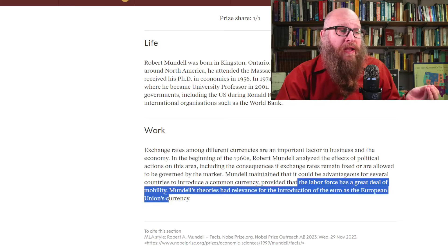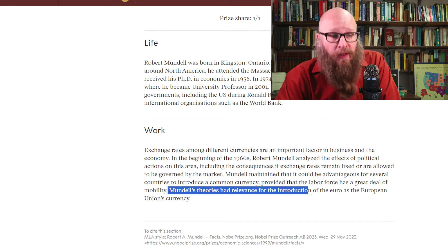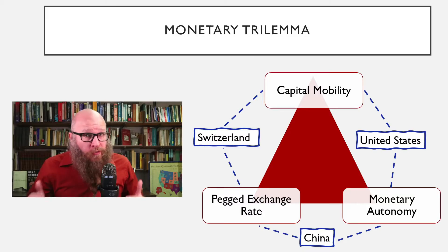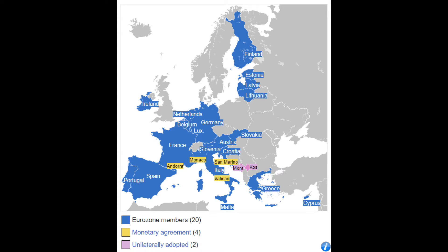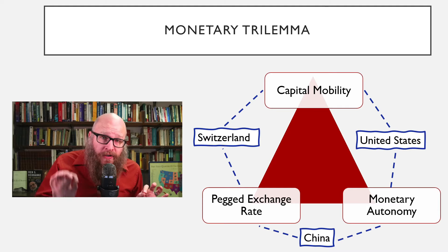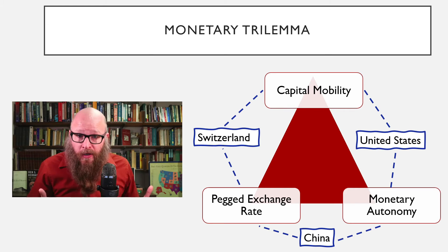Specifically, when the labor force had a great deal of mobility. In the United States, people move from state to state all the time — a significant portion of our population currently resides in a different state than the one they were born in. Mundell's early theories and empirical work had relevance for the introduction of the Euro as the European Union's currency, also since 1999. Each individual country such as France, Germany, Spain, and Ireland all have a perfectly pegged exchange rate and relatively free capital mobility inside the European currency.